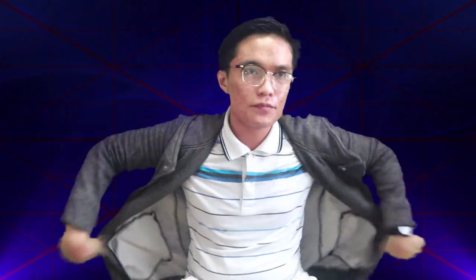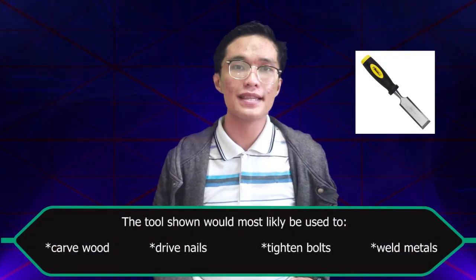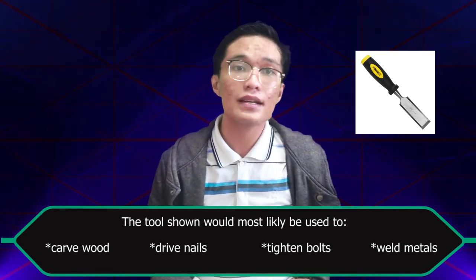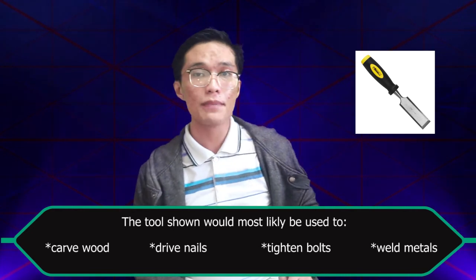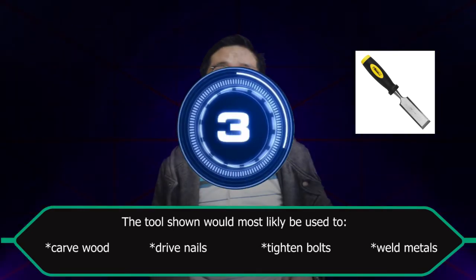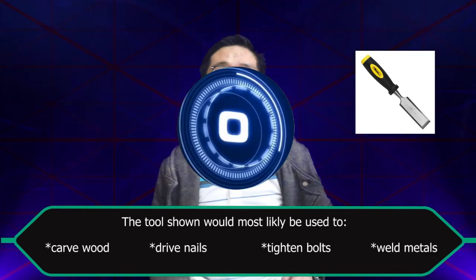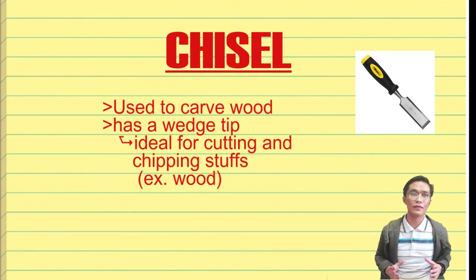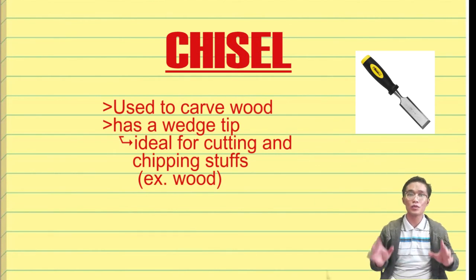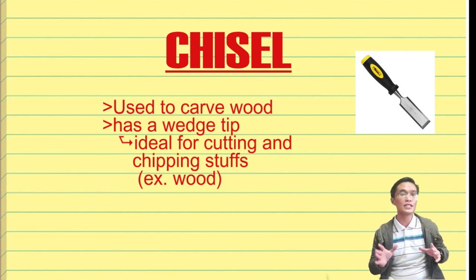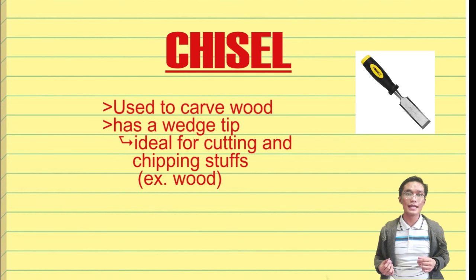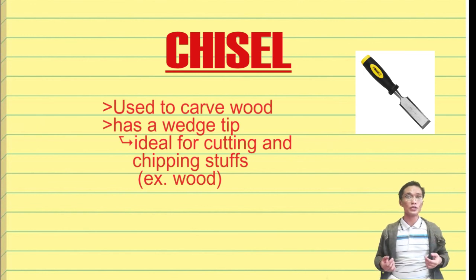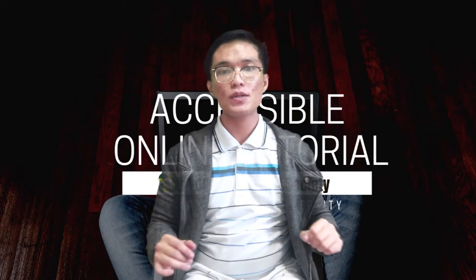Last question: the tool shown would most likely be used for — carved woods, drive nails, tighten bolts, or weld metals? This tool is called a chisel. It is used to carve wood. It is identifiable by the wedge-shaped tip, and wedges are typically used to cut or chip away various materials like wood.